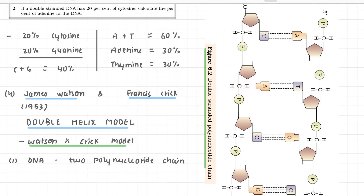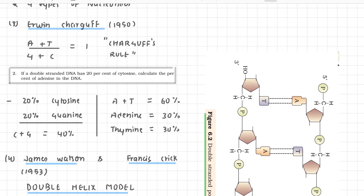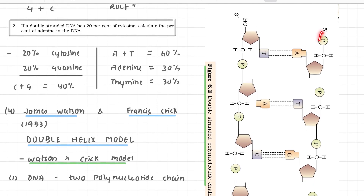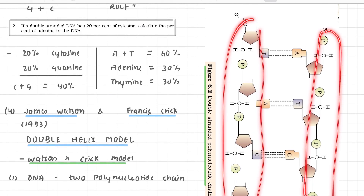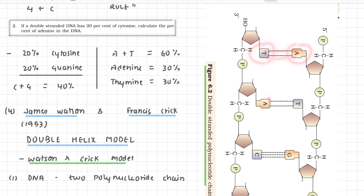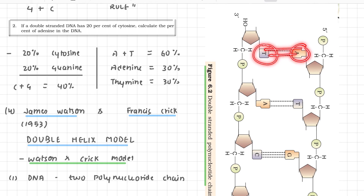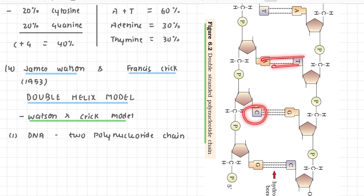Watson and Crick described DNA as being made up of two polynucleotide chains, as we can see. These two chains are held together by hydrogen bonds between the nitrogen bases — double bonds between A and T, and triple hydrogen bonds between C and G. The backbone of the DNA double helix is made up of sugar and phosphate groups on the outside.